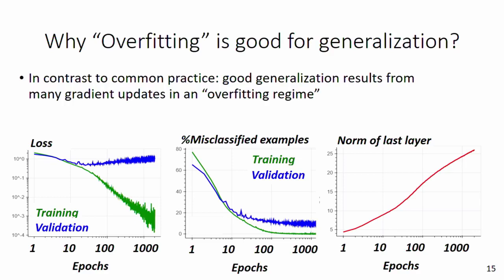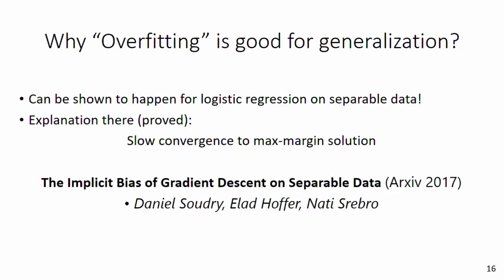We note another intriguing phenomenon: we appear to need many epochs to improve generalization in what may seem like an overfitting regime, where training error and loss vanish, validation loss increases, and weight norm diverges. Early stopping practice suggests we should stop training when validation loss increases, and yet the validation accuracy keeps improving, although very slowly. We show this happens even for logistic regression over separable data — a single-layered neural network with logistic loss — and prove that this behavior is related to the slow convergence to the maximum margin solution, which is also true for deep models under several strong assumptions.